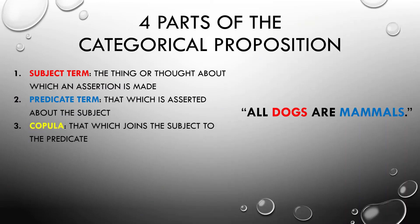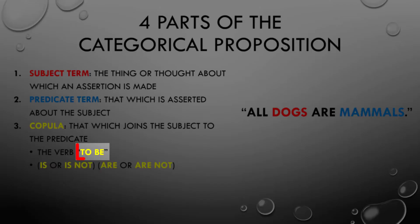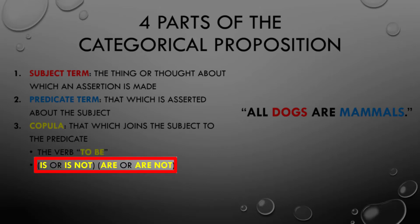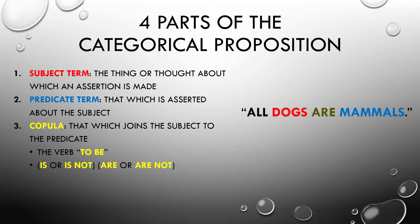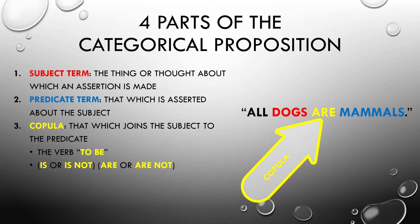Third is the copula, that which joins the subject to the predicate, and in logic it is always the verb to be: is or is not, are or are not, was or was not — present tense, past tense, it doesn't matter. In 'all dogs are mammals,' the copula is 'are' rather than 'are not,' because this is an affirmative claim, not a negative.